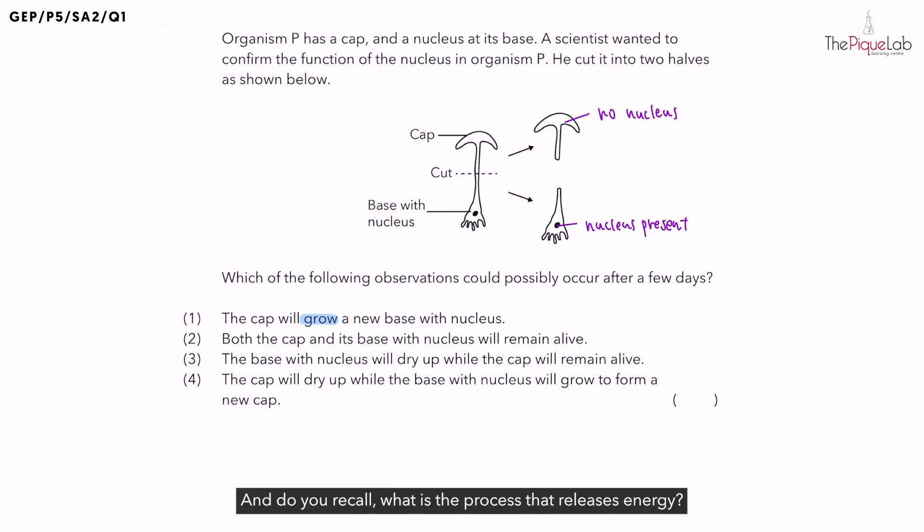And do you recall, what is the process that releases energy? It is respiration. Now, which cell part is responsible for controlling the process of respiration? It is the nucleus. Hence, if the cap does not have a nucleus, will it be able to carry out respiration? No, there will be no respiration.